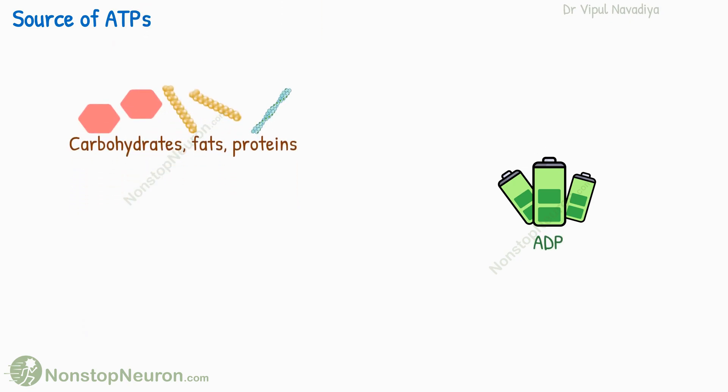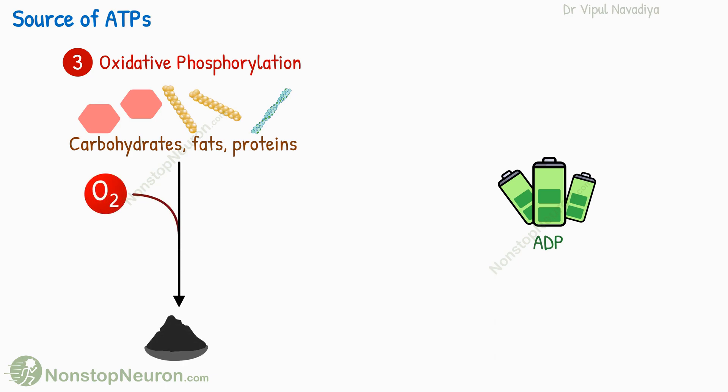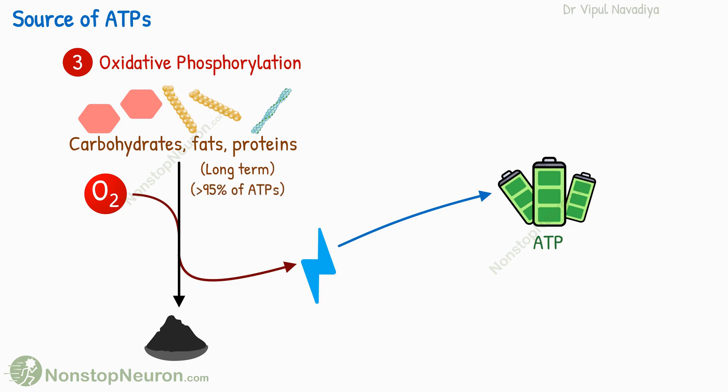And that's where the third and ultimate source of energy comes in: oxidative phosphorylation. Oxidative metabolism of carbohydrates, fats, and even proteins releases energy that is used to regenerate ATPs from ADPs. It lasts as long as the muscle gets the supply of these energy sources and oxygen. During a long-term muscle contraction, more than 95% of ATPs are supplied this way.